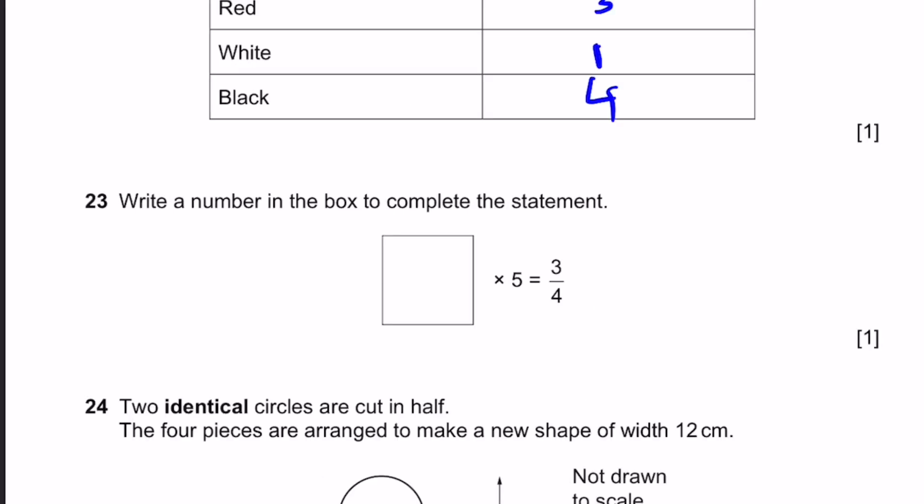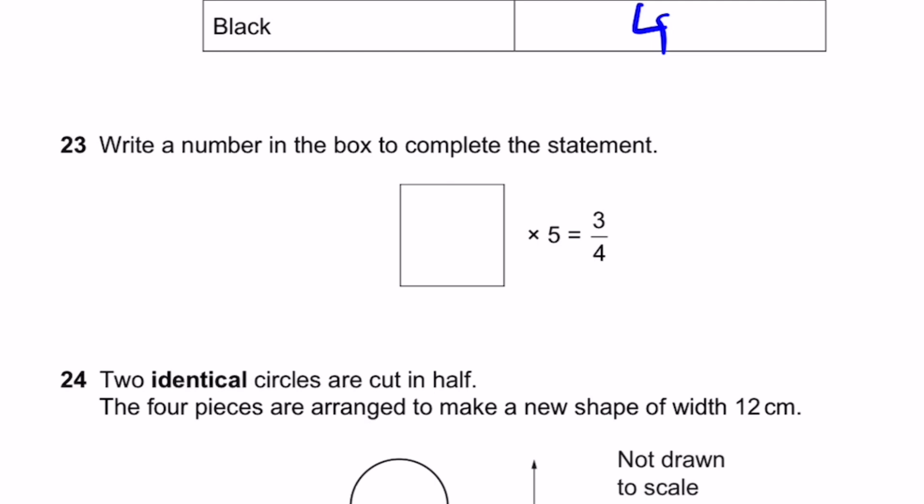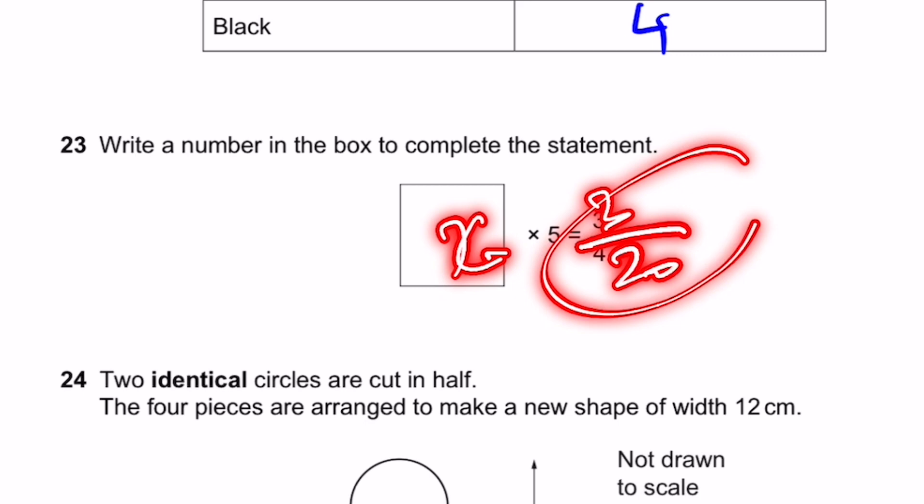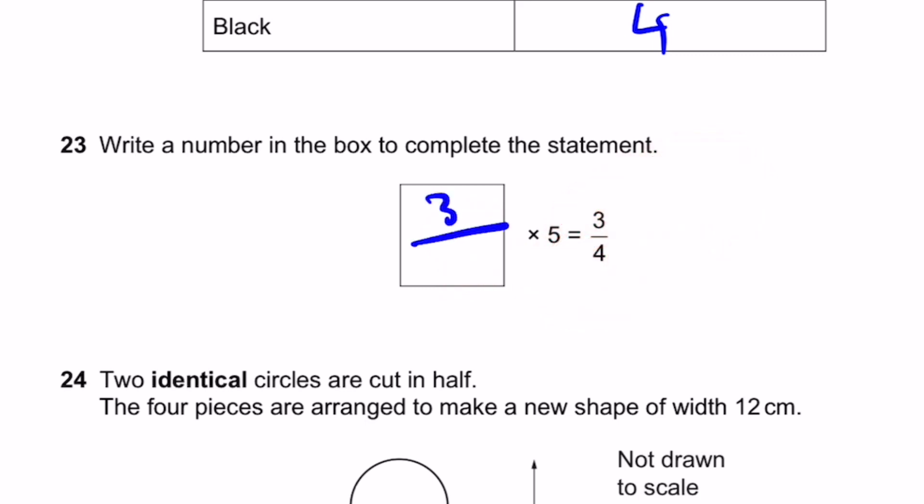Question 23. Write a number in the box to complete the statement: blank times 5 equals 3/4. Let's say this number is x. x times 5 equals 3/4. That means we divide by 5 on both sides. By the way, this is 5 over 1. So 3/4 divided by 5, that means x equals 3/20. So this is our answer.